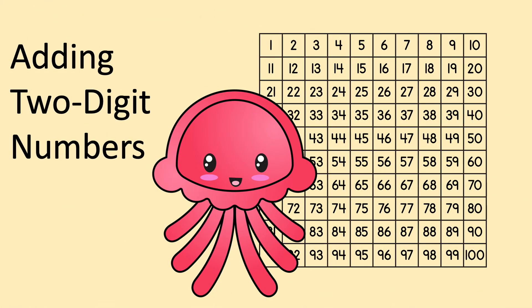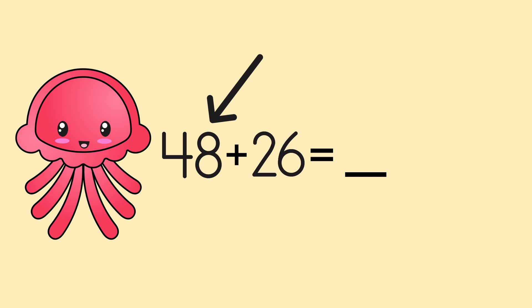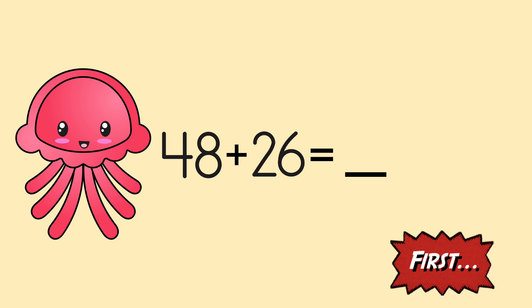So today, we're adding two-digit numbers. Let's add this number sentence: 48 plus 26 equals blank. The first thing we're going to do is find 48 on our hundreds chart.